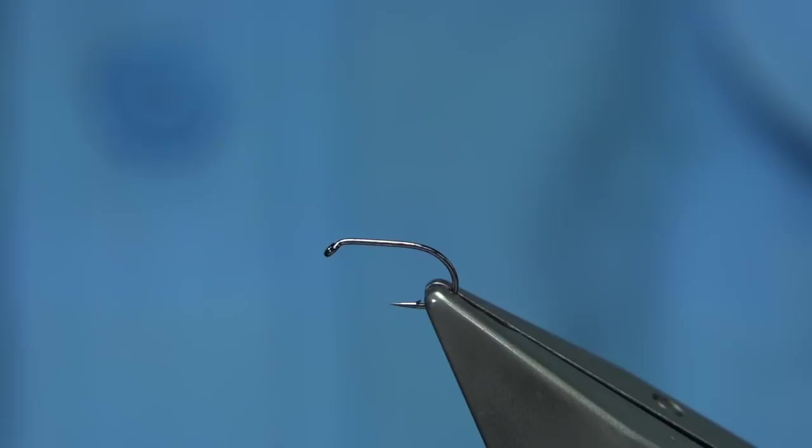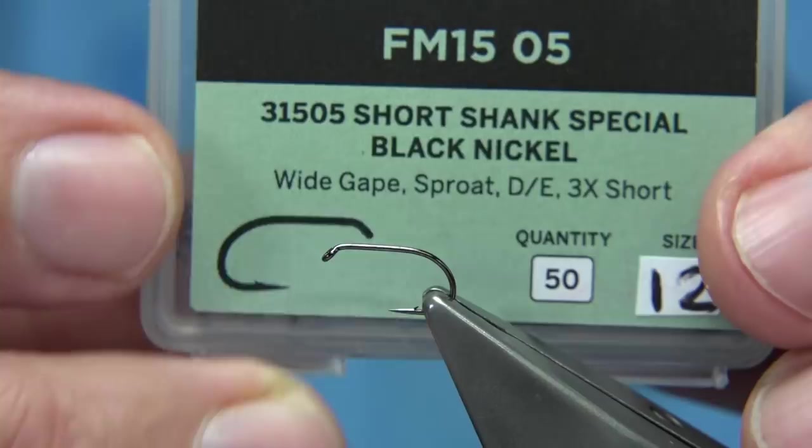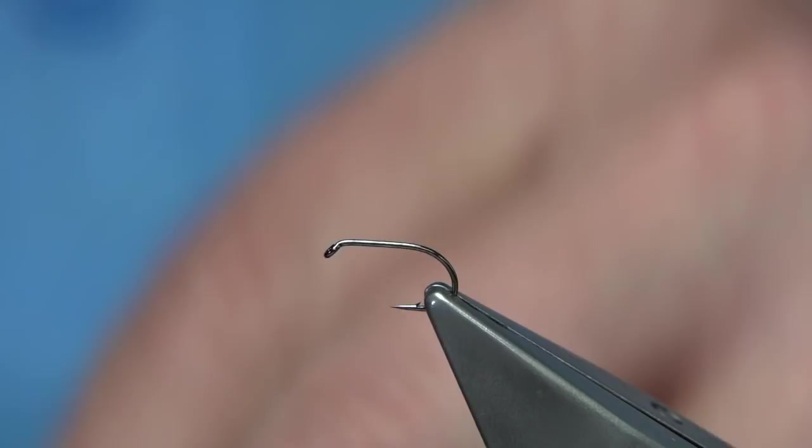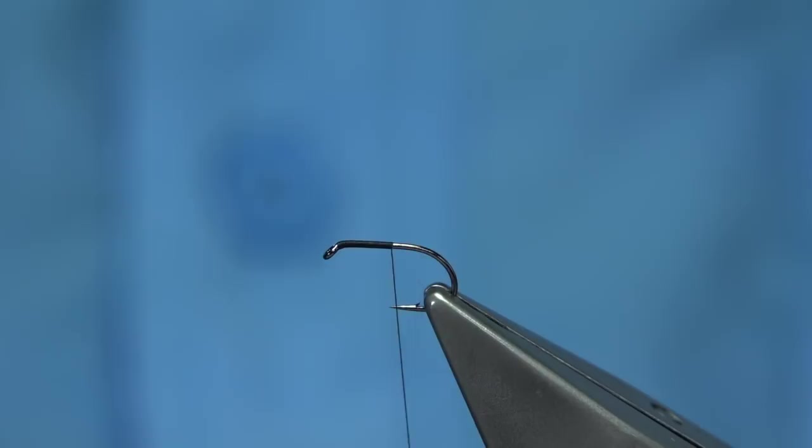I'm going to be tying the red tag hog hopper version. Hook choice is up to yourself, but one of my favorite hooks is this Fuller Mill short shank special in black nickel. This is a size 12. The shank equivalent length is a size 14, but the gape is equivalent to a size 12. The thread I'm going to be using is uni-thread 80 in black. I'm going to put a layer of thread down from the eye to the point of the hook.